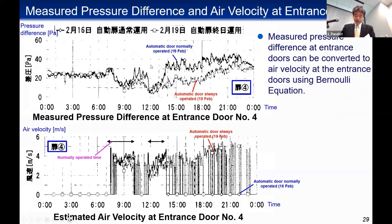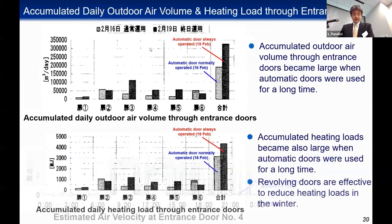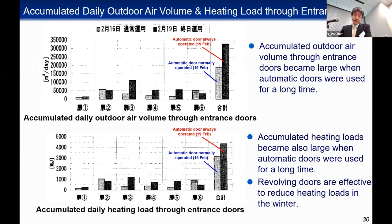The measured pressure difference at the entrance door can be converted to air velocity using Bernoulli's equation. This slide shows accumulated daily outdoor air volume and heating load through entrance doors. The accumulated outdoor air volume through entrance doors became large when automatic doors were used for a long time. This demonstrates that revolving doors are effective to reduce heating loads in winter.